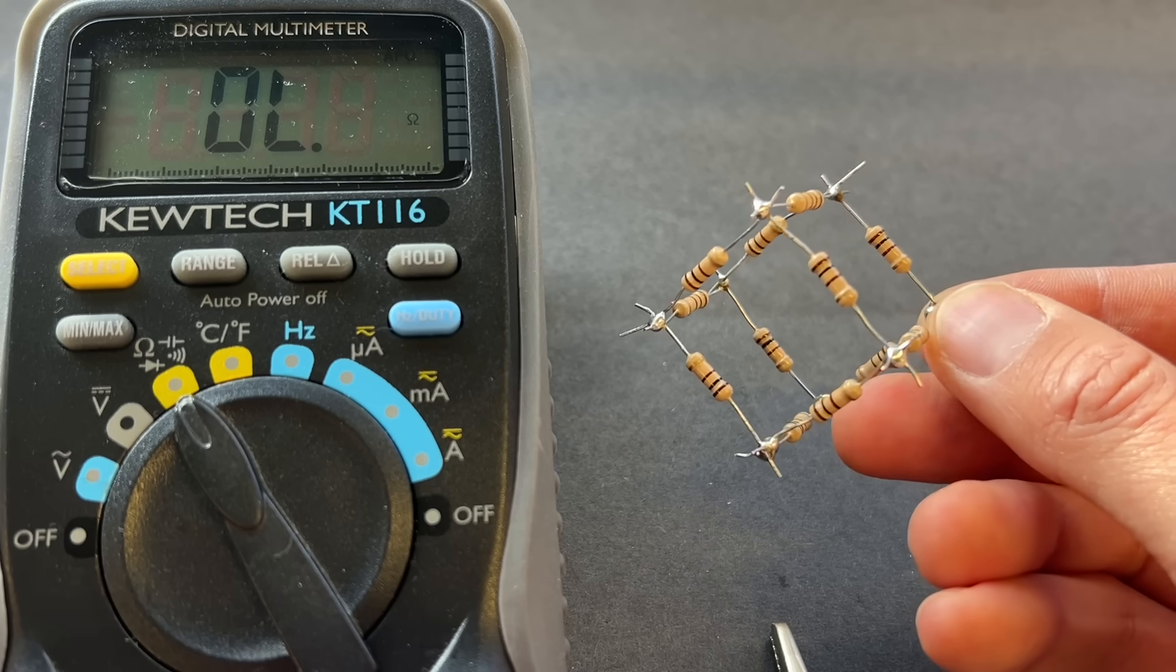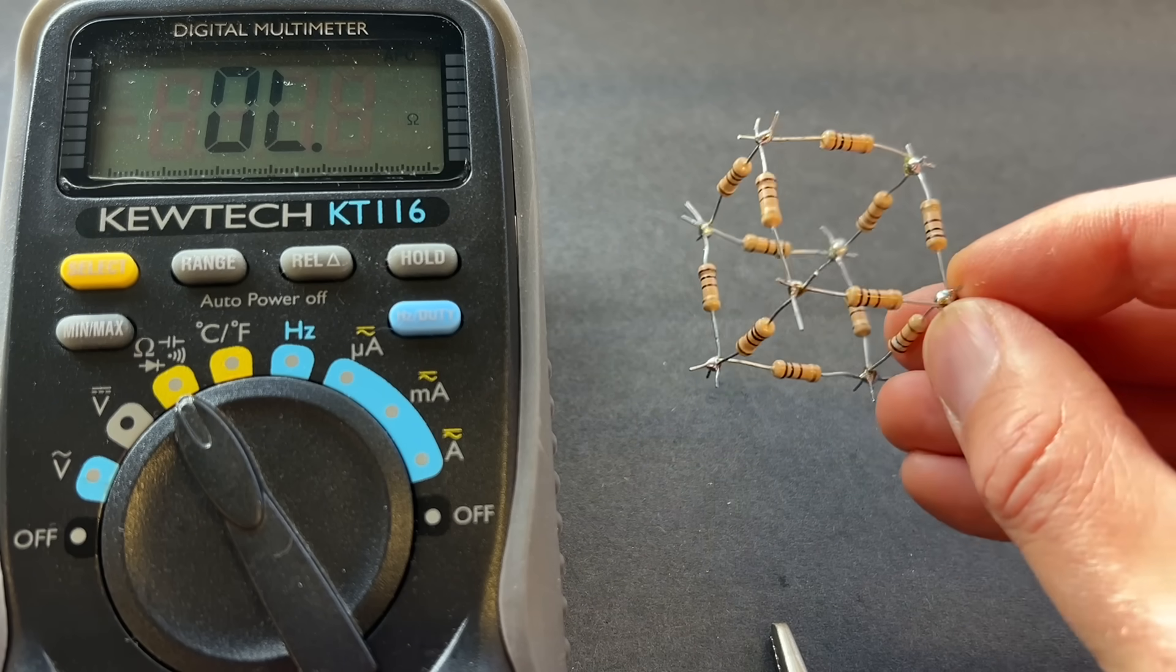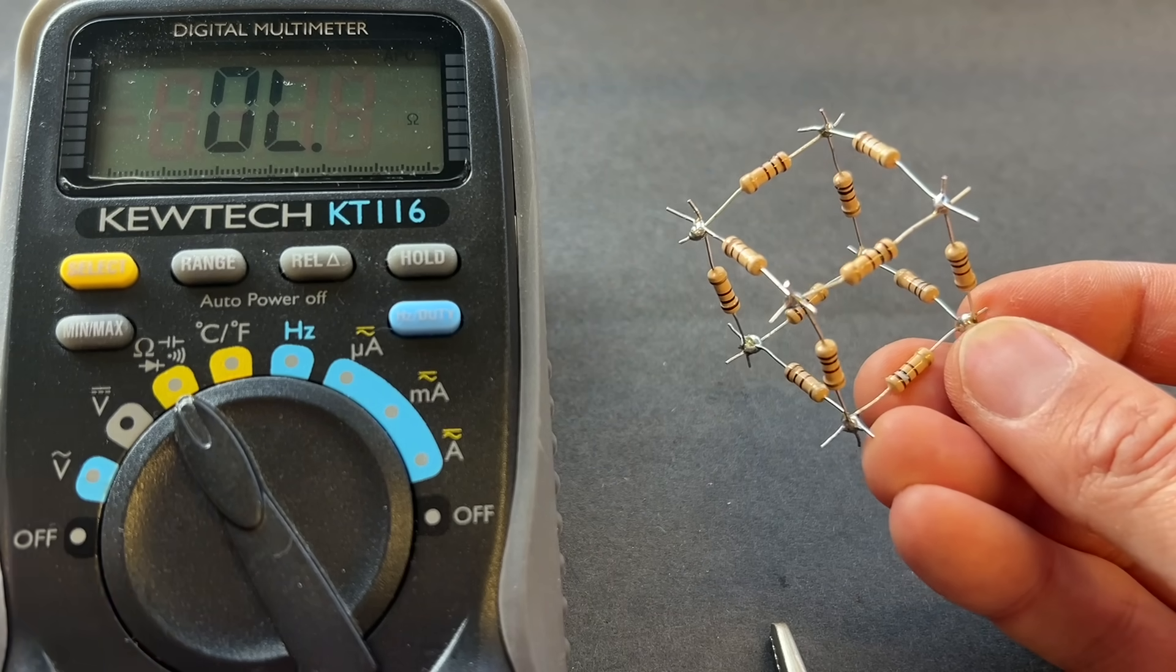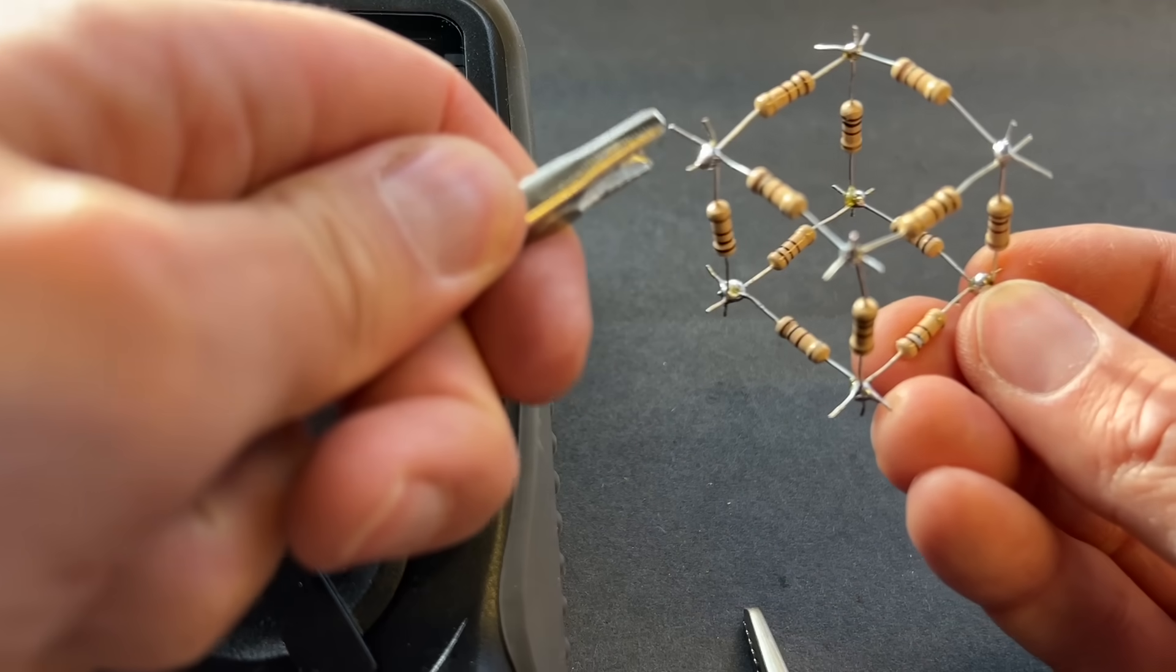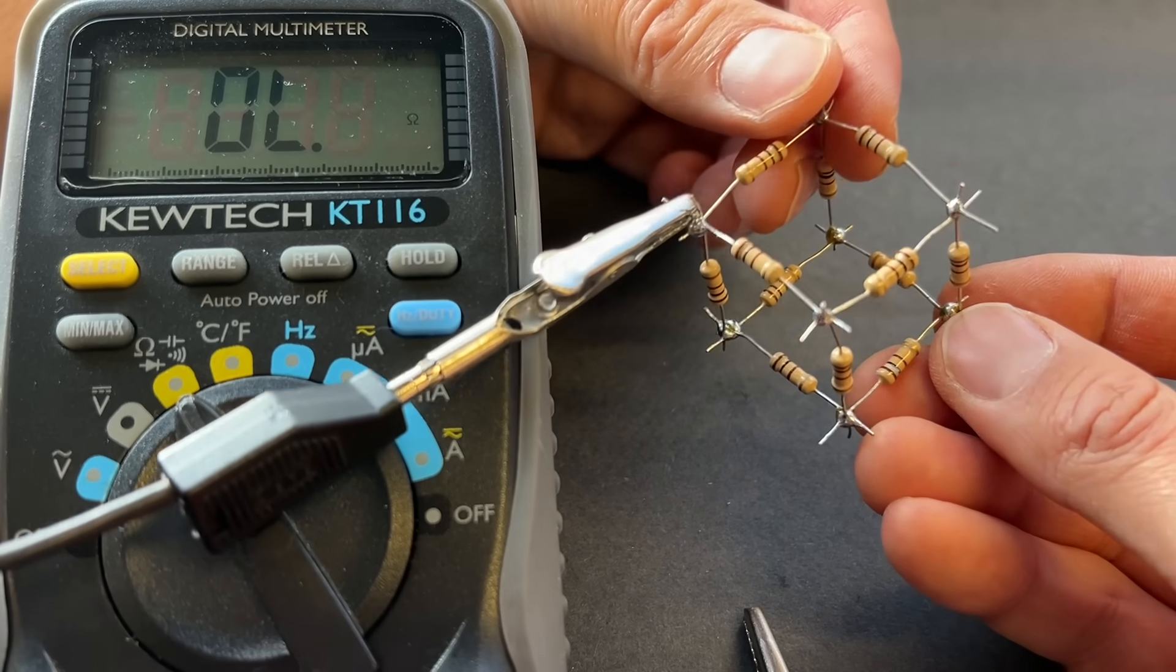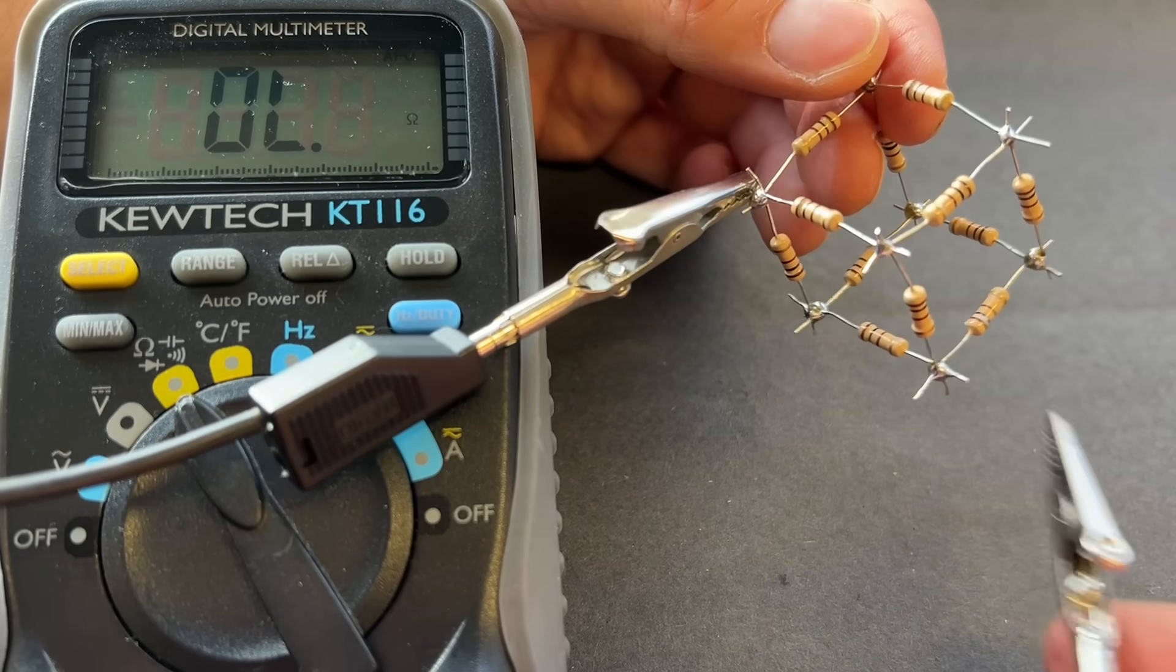So, the theory says that the total resistance between the opposite corners of the cube should be 5 sixths of R, which in my case should be 5 sixths of the 98.9 average resistance, which should give me 82.4 ohms.